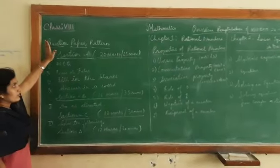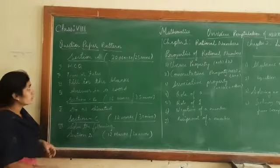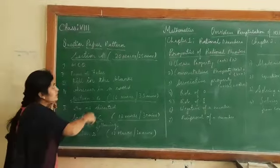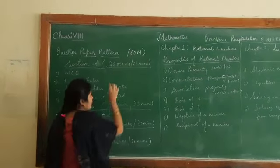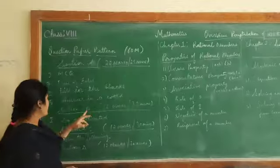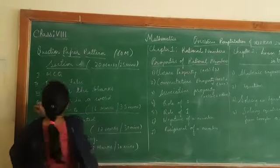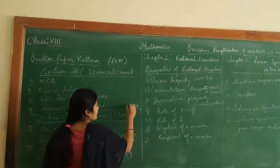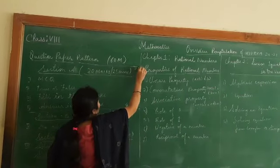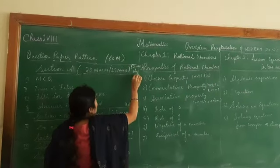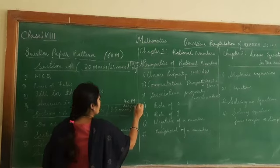Here is the question paper pattern - already discussed in my earlier video but I would like to repeat it. You have a 60 marks question paper where 20 marks are objective and sections B and C consist of 40 marks descriptive. So this is a 20 marks objective and 40 marks descriptive paper.